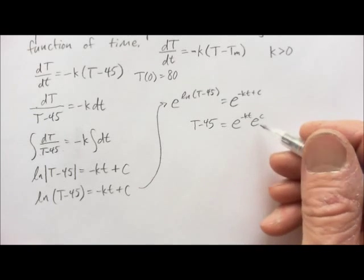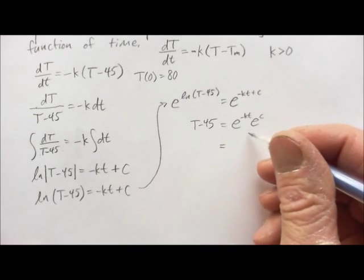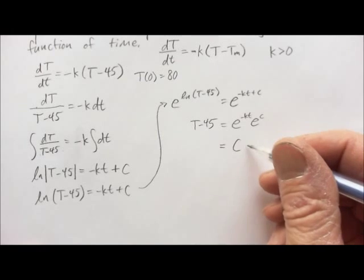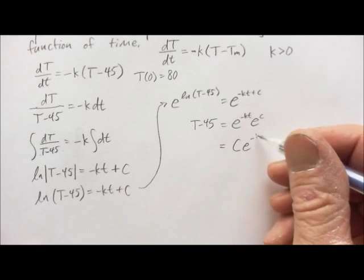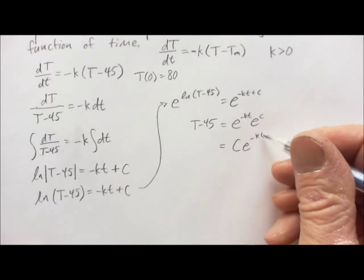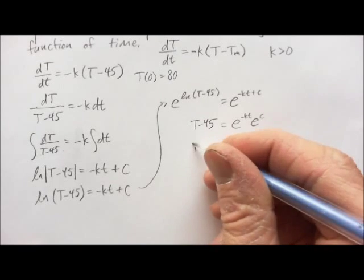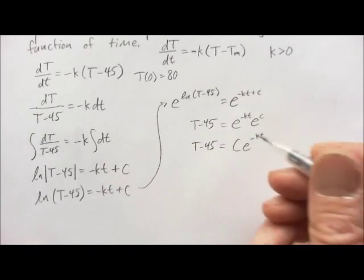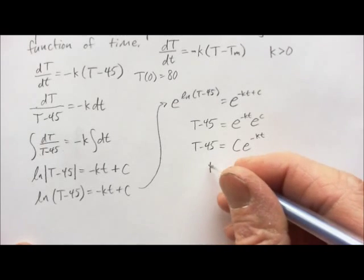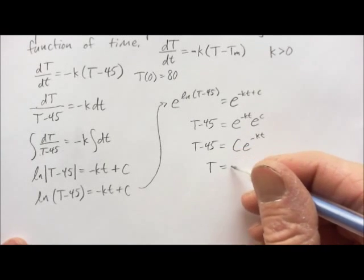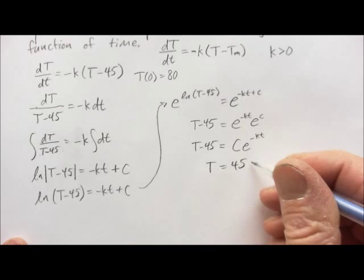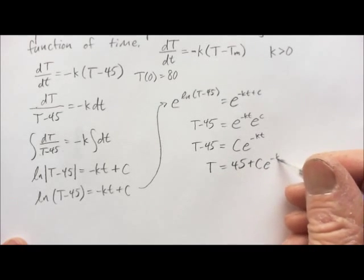So, we have T minus 45. That's because those are inverse functions of each other. Of course, this E to the C is some other constant, which I'll be sloppy and just call C again, although it's not the same C. E to the minus KT equals T minus 45, or T, if I add 45 to both sides, T is 45 plus C E to the minus KT.